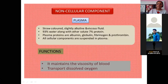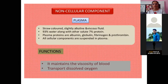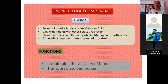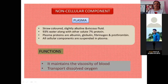Non-cellular component — plasma. Plasma is straw-colored, slightly alkaline, and viscous fluid. It is 93% water along with other solutes and 7% protein. Plasma proteins are albumin, globulin, fibrinogen, and prothrombin. All cellular components are suspended in plasma. Functions: it maintains the viscosity of the blood and transports dissolved oxygen.